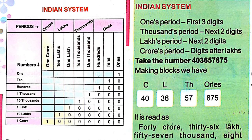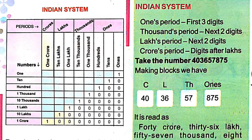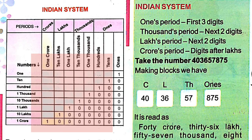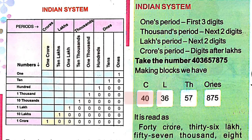The place value in the ones column is one, in the tens column is ten, in the hundreds column is one hundred. Now reading our sample number: in the ones period we have 8, 7, 5; in the thousands period, 5 and 7; in the lakhs period, 3 and 6; and in the crores period, 4 and 0.